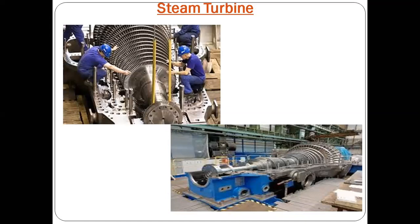The third important component is the steam turbine. These two photographs show what a steam turbine looks like. After the steam is driven through the heat exchanger, this high pressure steam strikes and rotates the steam turbine. When the steam turbine rotates, heat energy is converted into mechanical energy available at the shaft. This shaft is coupled with the alternator, and the alternator starts producing electricity.